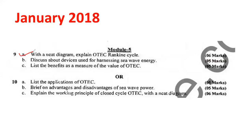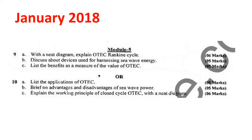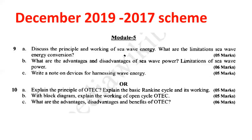Next is Q9a: with a neat diagram, explain the OTEC Rankine cycle. Q9b and Q9c: list the benefits and measure the value of OTEC. Q10a: list the applications of OTEC. Q10c: explain the working principle of closed cycle OTEC. There are two types — open type and closed type — you have to study both. These are the important topics to focus on, as one or another question will be repeated in your examination.